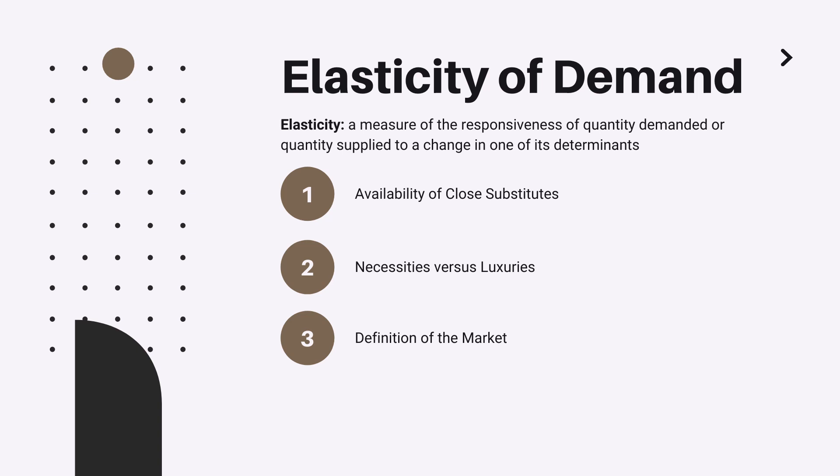As an example, you can think of pizza and food. Most probably you will be able to find a substitute for a pizza but will have a problem finding a substitute for the food category. Next, time horizon: goods tend to have more elastic demand over longer time horizons.